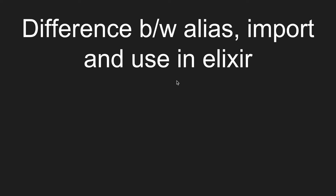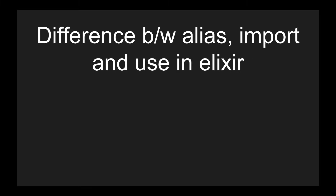Hi guys, this is Hamad from Code Genie, and today I'm going to talk about the difference between alias, import, and use in Elixir. In object-oriented programming languages, we use objects to access their properties and methods inside a class. But Elixir is a functional programming language, so we use a different approach — lots of functions inside modules — and we can access those functions from other modules.